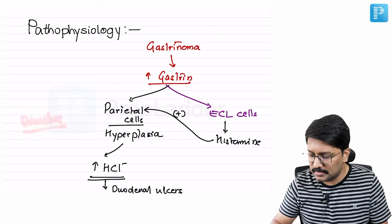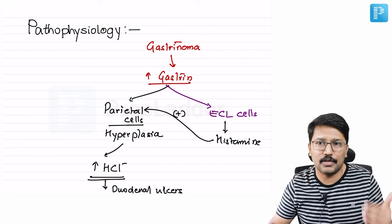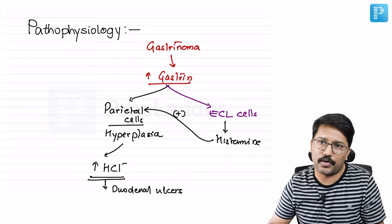The second reason why there may be diarrhea in these patients is there is significant ulceration of the duodenal mucosa. That can lead to some degree of malabsorption, particularly carbohydrate.